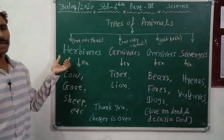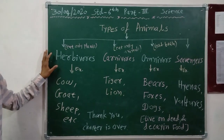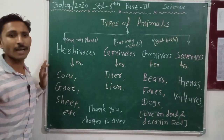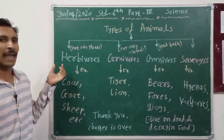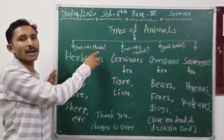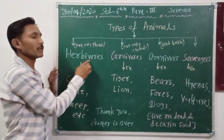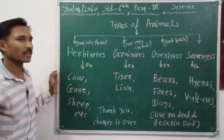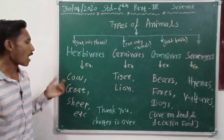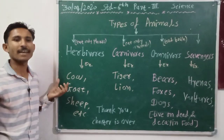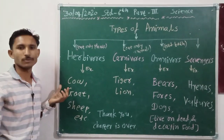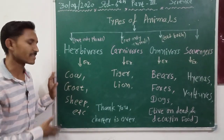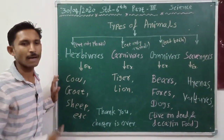Herbivores — kisko bolte hain? Animals which eat only plants are called herbivores. Examples: cow, goat, sheep, buffalo, etcetera — these all eat only plants.